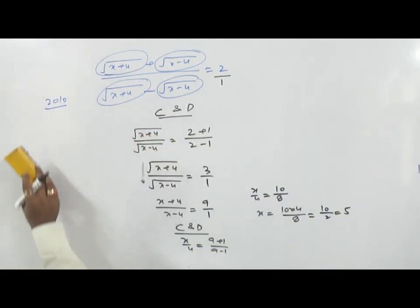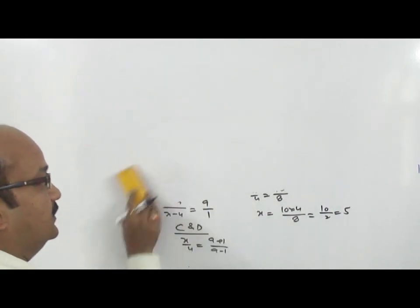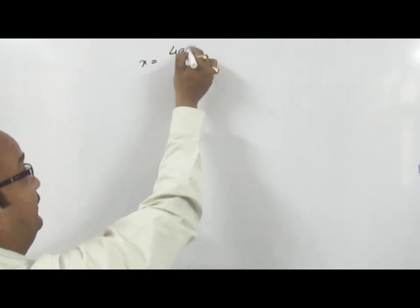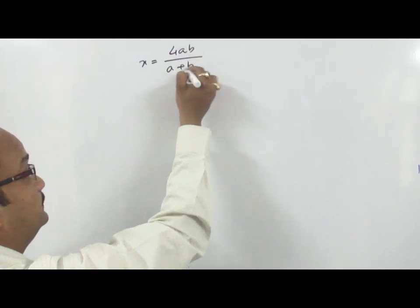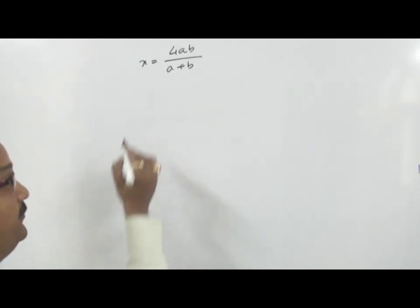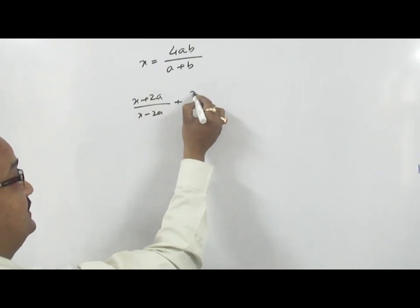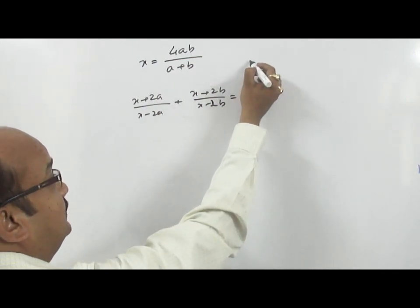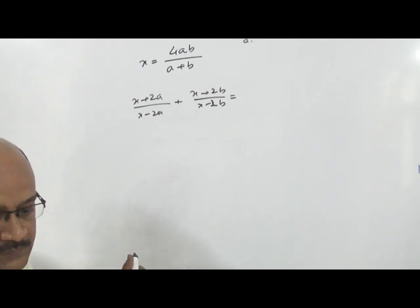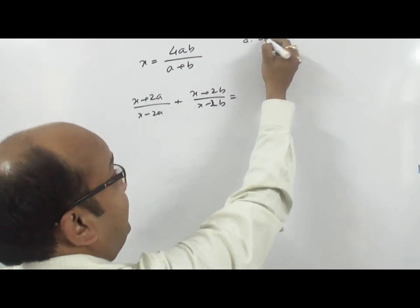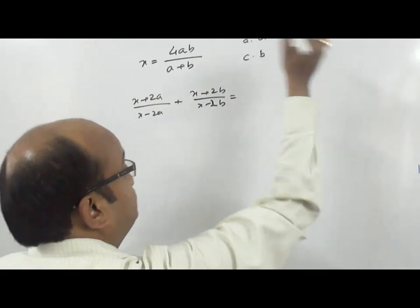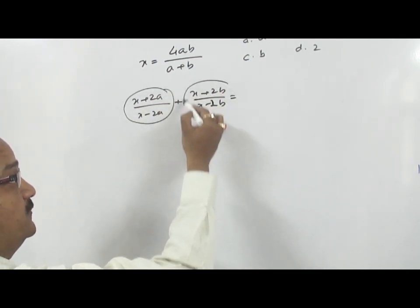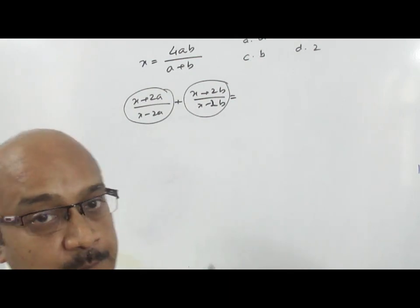Very good concept. A similar question appears several times in examinations. If we have X is equal to 4AB upon A plus B, we have to calculate the value of: X plus 2A upon X minus 2A, plus X plus 2B upon X minus 2B. The options are A, 2AB, B, and 2. This is the form of C and D, but we can apply C and D only in proportion form — when we have two equal ratios. In this case we have a plus sign, so we can't apply direct proportion.